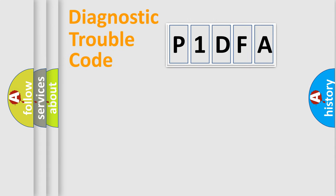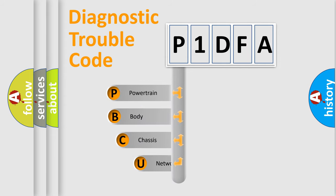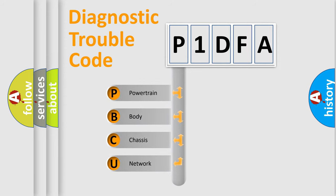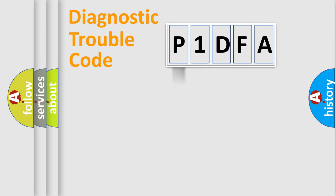Let's do this. First, let's look at the history of diagnostic fault code composition according to the OBD2 protocol, which is unified for all automakers since 2000. We divide the electric system of an automobile into four basic units: Powertrain, Body, Chassis, and Network. This distribution is defined in the first character of the code.